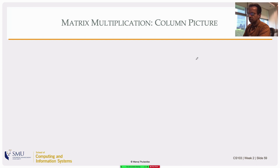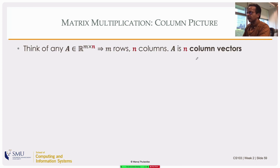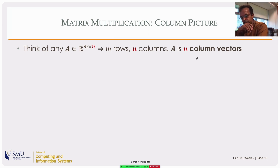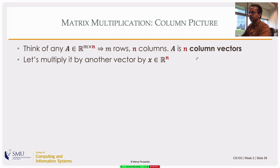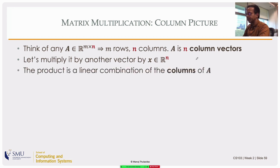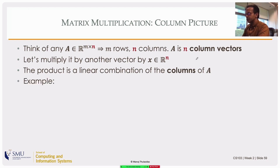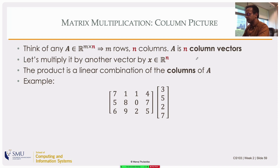Now the column picture. If you have a matrix A in R^(m×n) — m rows and n columns — you can think of it as n column vectors standing side by side inside the matrix. When you multiply A on the right by a vector x, the result Ax is actually a linear combination of the columns of A, with the linear combination defined by the elements of x.